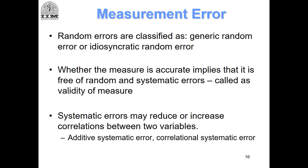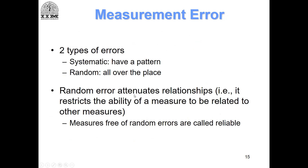What you cannot capture is whether there is a systematic error or not just by looking at correlations between items. And most of our statistical techniques are based on correlations. So all the things we are going to do — reliability testing, factor analysis, structural equation modeling in this workshop — are directed towards random error, because random errors for sure attenuate relationships. If you have to capture systematic errors, you cannot capture them through analysis alone.